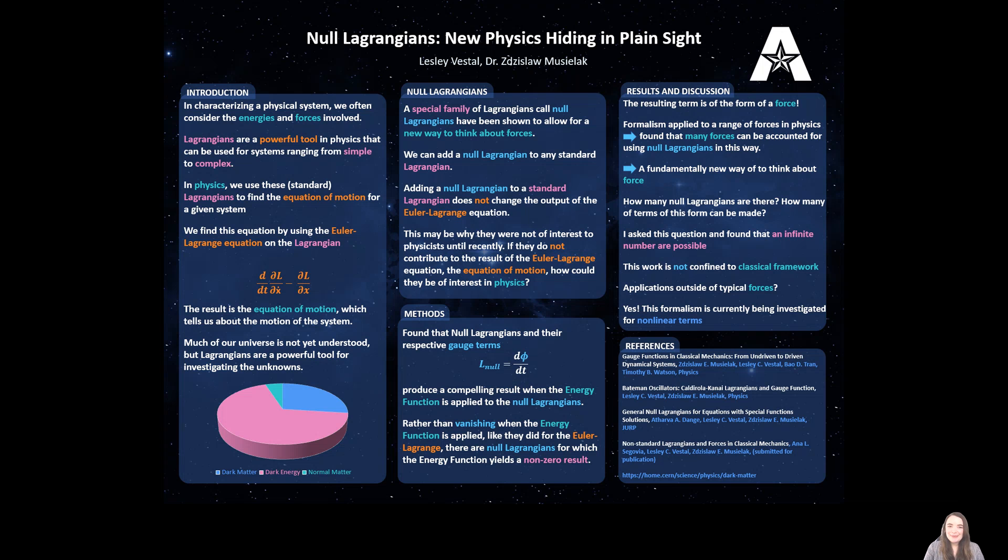Null Lagrangians are a special family of Lagrangians and they've shown us a new way to think about forces. A null Lagrangian we can feed through the Euler-Lagrange equation just like a standard Lagrangian. But when you do that, you get zero. Instead of giving you an interesting equation of motion with some different variables, the Euler-Lagrange applied to a null Lagrangian just gives you a result of zero.